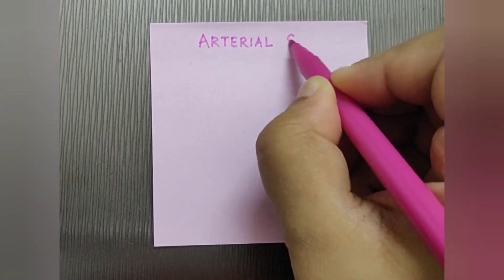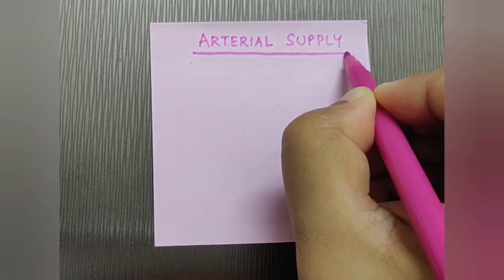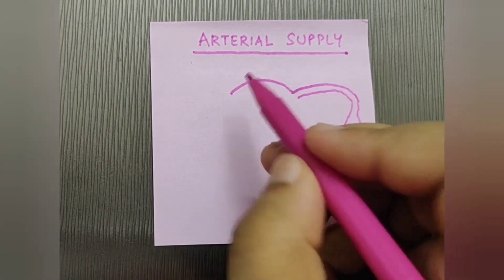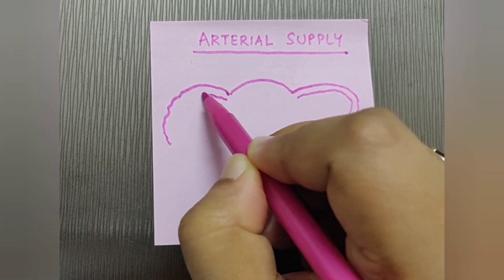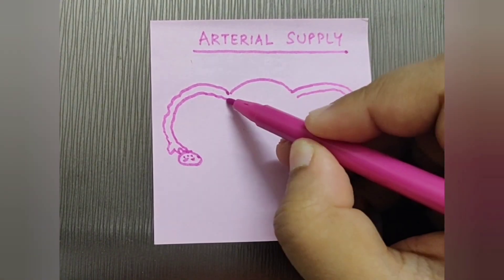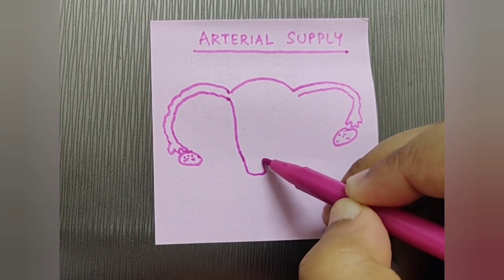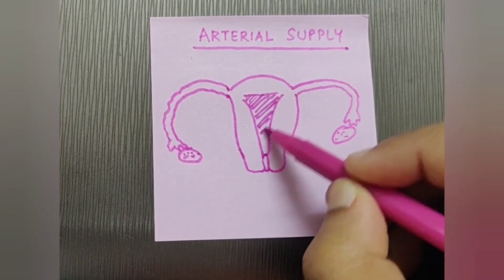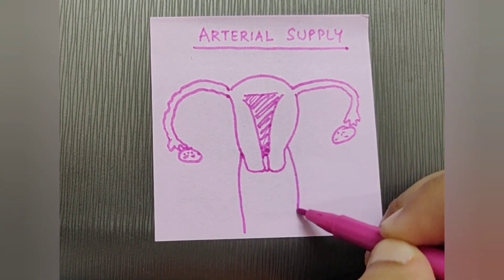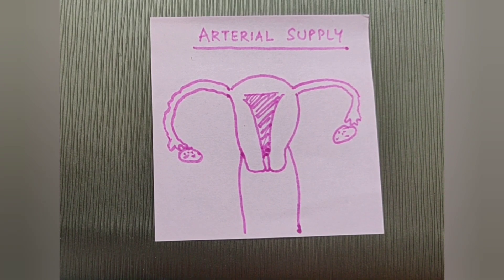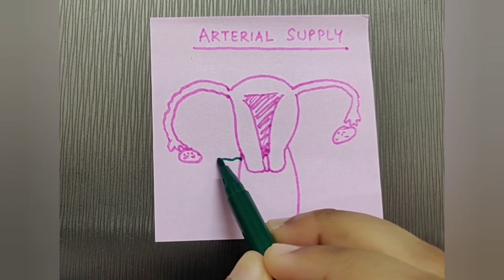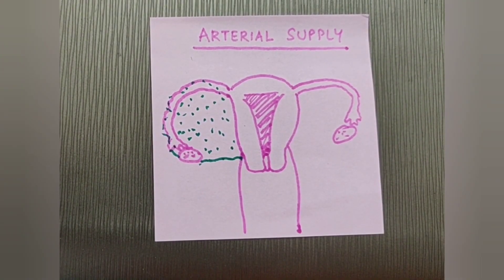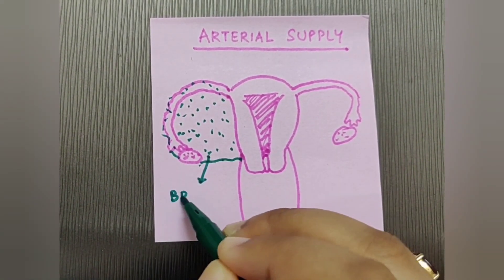Now let's see the arterial supply of the uterus. I'm drawing the uterus with the fallopian tubes and ovaries on either side, along with the body and cervix of the uterus, the cavity inside, and the vagina. I'm also drawing and marking the broad ligament.